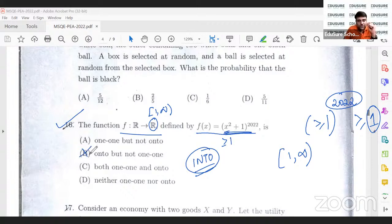So onto option ko out kareenge. So A or D hoga. A hoga when the function is 1 to 1. Now, let's understand whether the function is 1 to 1 or not.